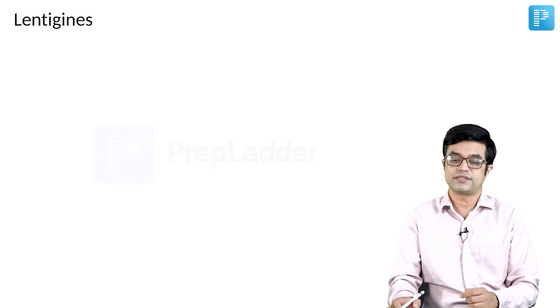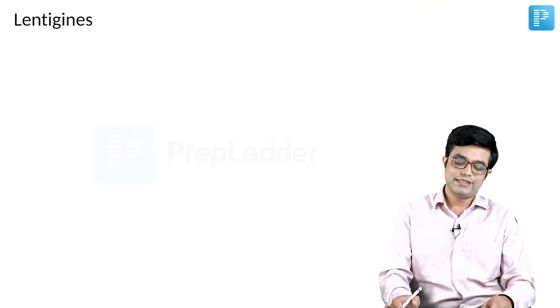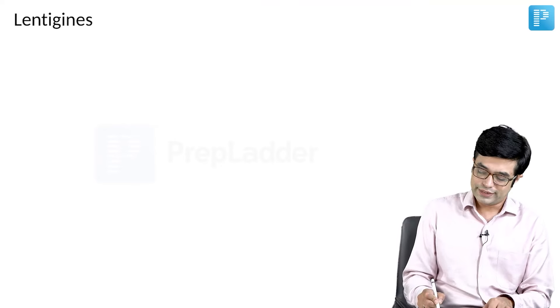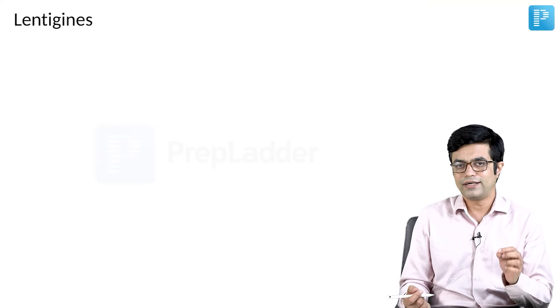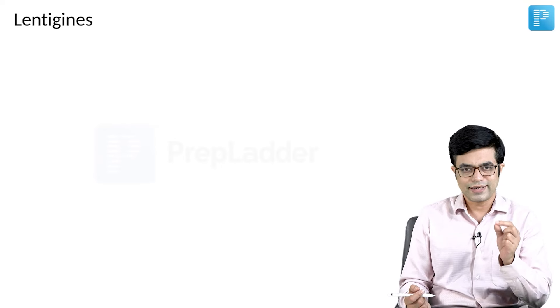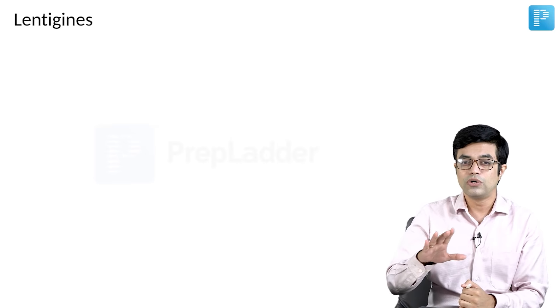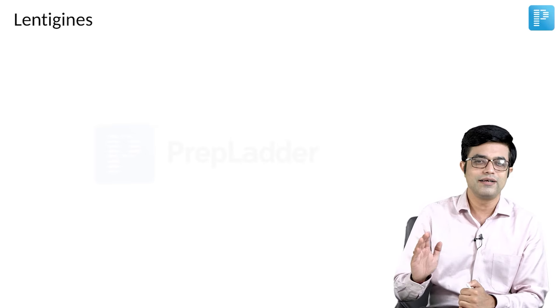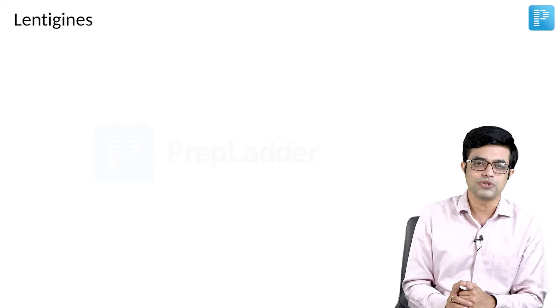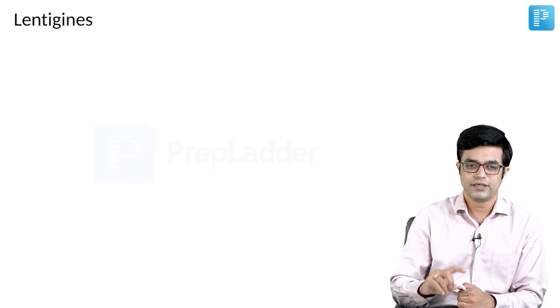The third thing are lentigines. Lentigines are similar to ephelides, but they are slightly larger in size compared to them. They do not occur in photo-exposed parts. They are unrelated to sun exposure and are relatively well defined.